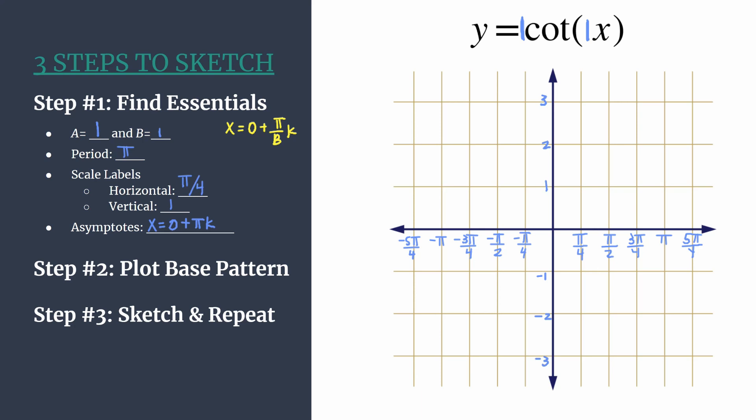Alright, now we're ready for step two. Let's plot our base pattern. So remember for an unshifted cotangent graph, the pattern goes asymptote, first curve setting point, zero or x-intercept, second curve setting point. And hopefully you have a general idea of what a cotangent graph looks like. If not, this is a great one to learn on. So let's go ahead and plot one cycle of y equals cotangent x.